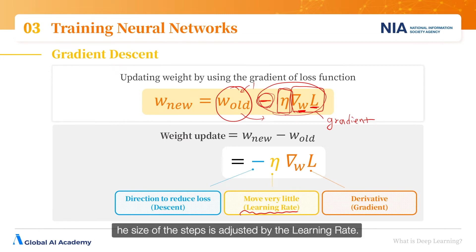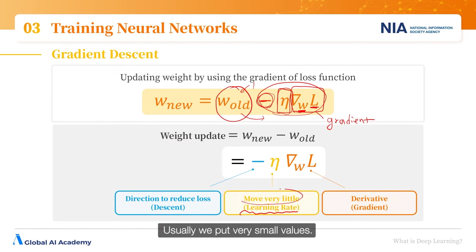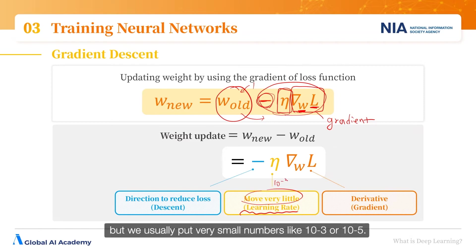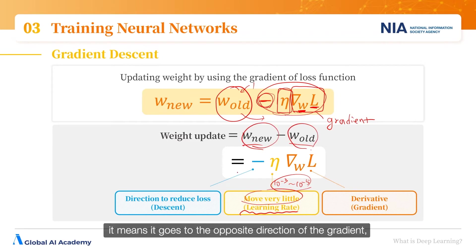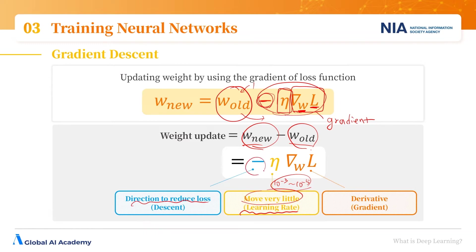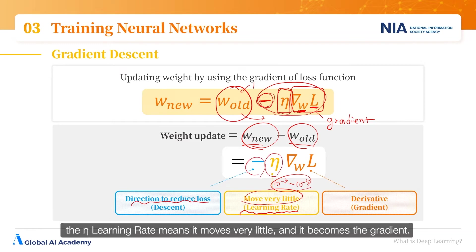The size of the steps is adjusted by the learning rate. We usually put very small values — not a magic number, but typically something like 10 to the minus 3 or 10 to the minus 5. In other words, if the difference between the new weights and the old ones is negative, it means it goes in the opposite direction of the gradient. The learning rate means it moves very little, and it becomes the new gradient direction.